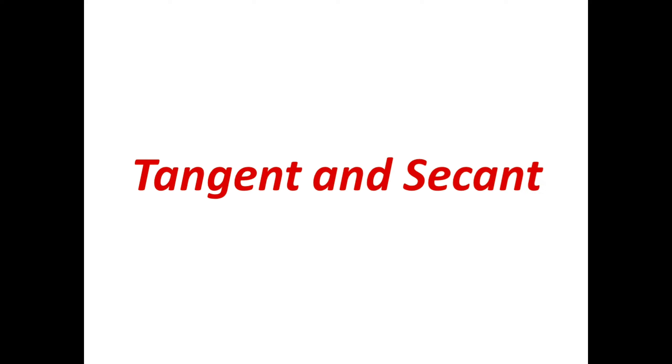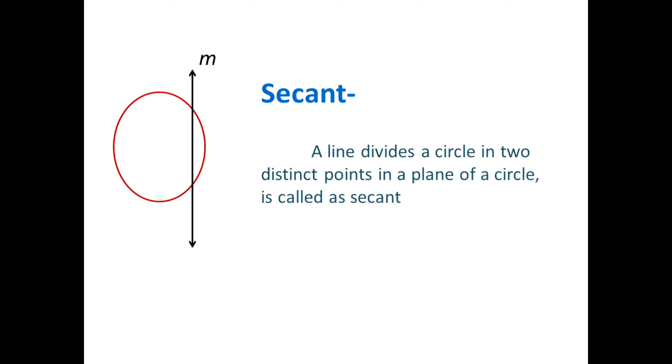The first concept we are going to learn is tangent and secant. Let's see how to identify a tangent and a secant and how we can distinguish between them. First is the secant. Let us consider a circle in a plane. Suppose there is one line M which intersects the circle in two distinct points — such a line is called a secant. So a secant is defined as a line which intersects a circle in two distinct points in the plane of the circle. Here in the figure, line M is the secant.